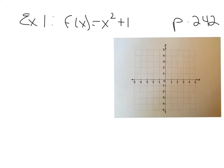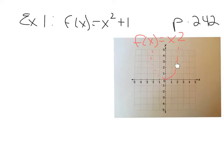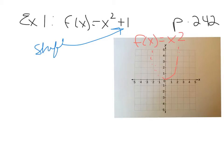The graph of f of x equals x squared is just a parabola that goes through the origin with a standard width, and the axis of symmetry is the y-axis. But when we start adding or subtracting things to the x squared, this shifts our vertex. A plus 1 will shift the vertex up, moving it from the origin to positive 1.